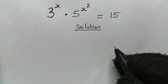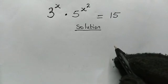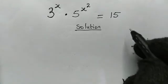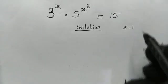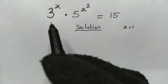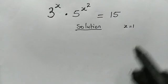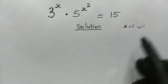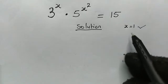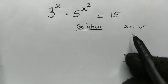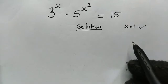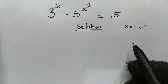Hello good viewers, welcome back once again. Today we have this interesting exponential equation and we're going to solve for the values of x. One can easily say that x is equal to 1, because 3 to the power of 1 times 5 to the power of 1 is 15. Therefore this is one solution. But the question is, is 1 the only solution? The answer is no — this equation has two real solutions. Let's go ahead and find the other solution.